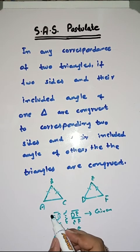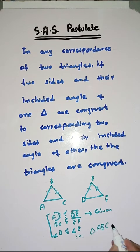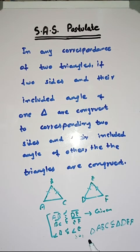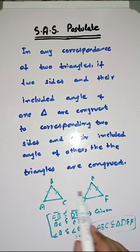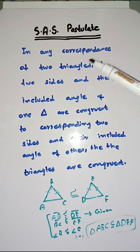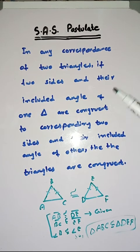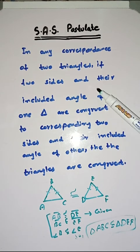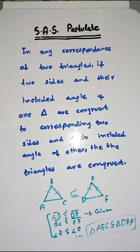If you have three things congruent — two sides and one included angle — then triangle ABC is congruent to triangle DEF. Simply put, if two sides and one included angle are congruent, it means side, angle, side. So if we have two triangles with two sides and one angle congruent, then the triangles are also congruent. This is the SAS postulate.